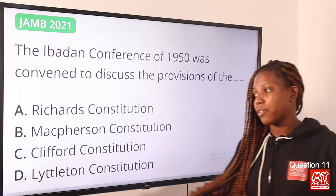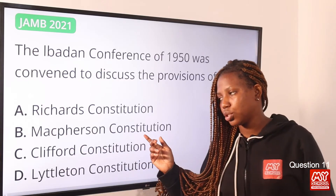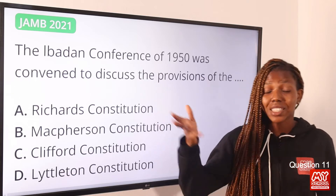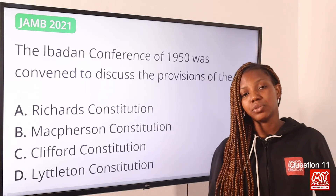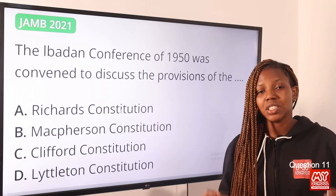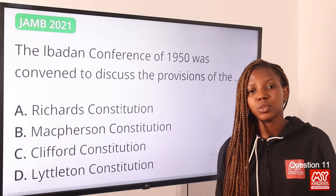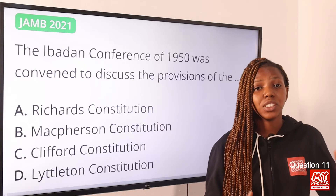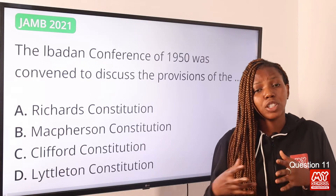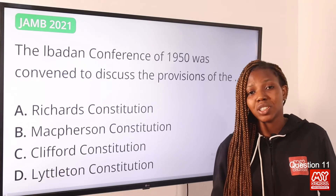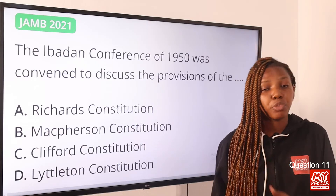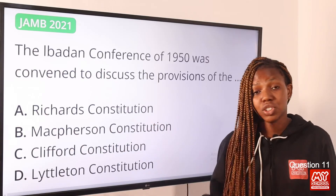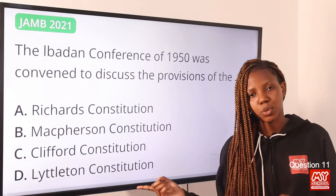Question eleven: The Ibadan Conference of 1950 was convened to discuss the provisions of the — the answer is the Macpherson Constitution. Prior to 1950 there was the 1946 Richards Constitution. The Ibadan Conference reviewed the 1946 Richards Constitution and deliberated on new provisions, which gave rise to the Macpherson Constitution of 1951.